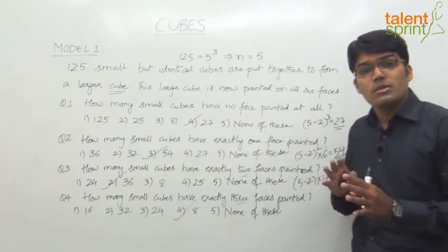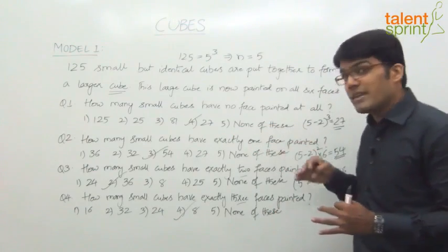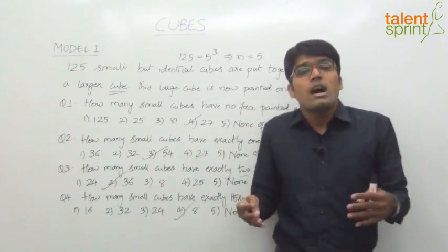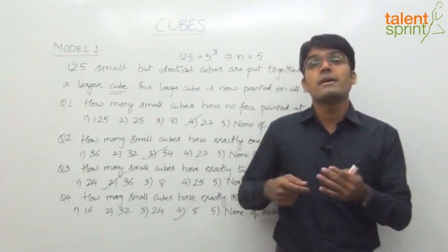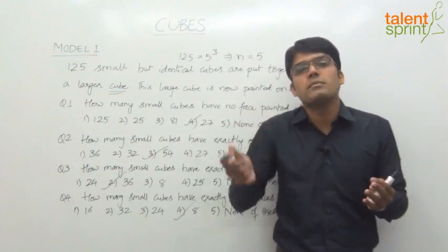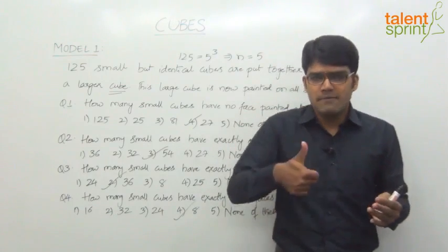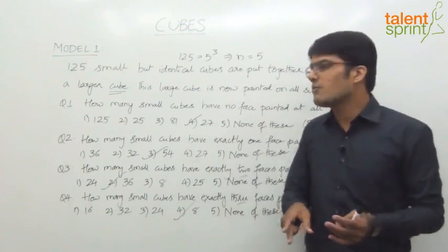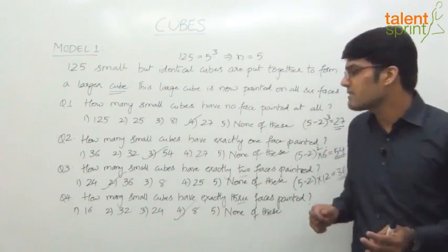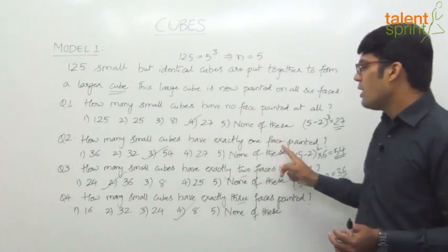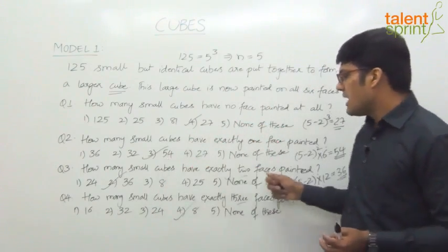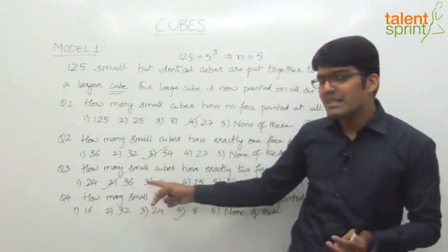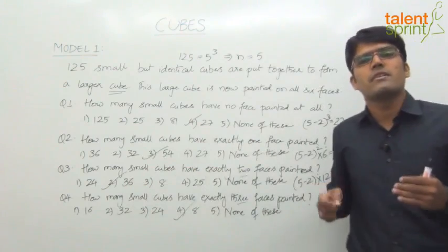Similarly, 'at most 2 faces painted' means maximum 2, so it can be 2, 1, or 0 faces painted. Add those answers: 0 faces painted is 27, 1 face painted is 54, 2 faces painted is 36. So 27 plus 54 plus 36 equals 117 — wait, 54 plus 36 is 90, plus 27 is 117. The answer would be 117.